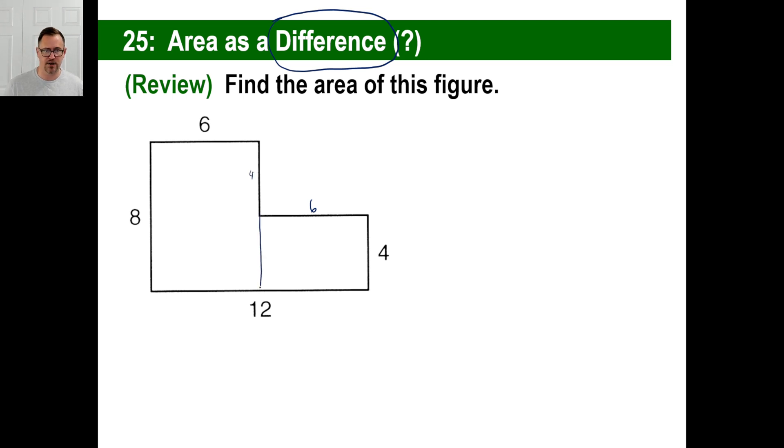I want to make this into two rectangles. So 6 times 8 is 48, and then I have this one is 6, and then times 4 is 24, 48 plus 24 is 72, got it. And you'd be right.